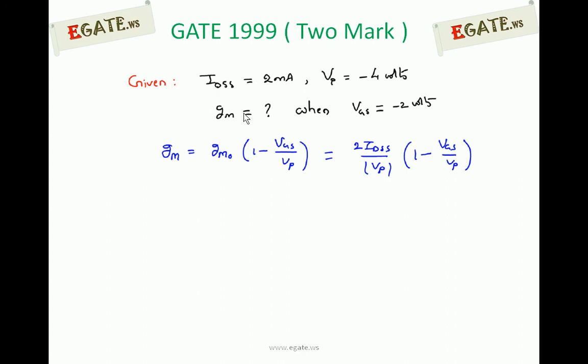And now the transconductance equation is: GM is equal to 2 IDSS by VP into 1 minus VGS by VP. This is the transconductance equation.